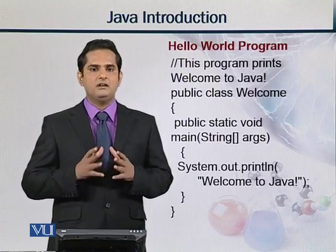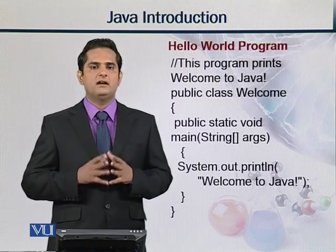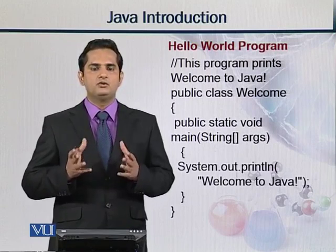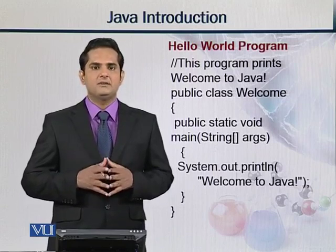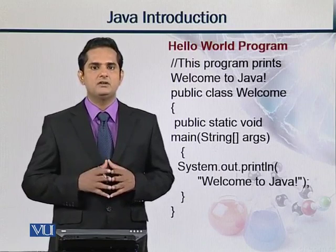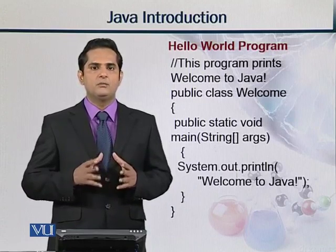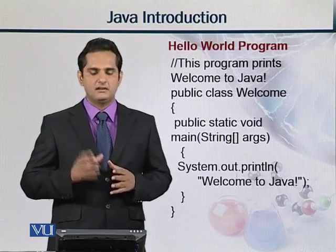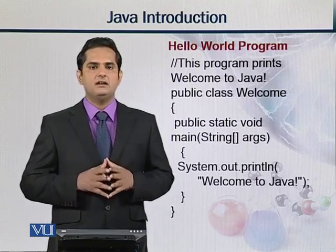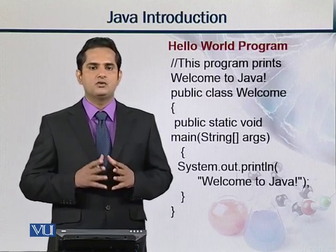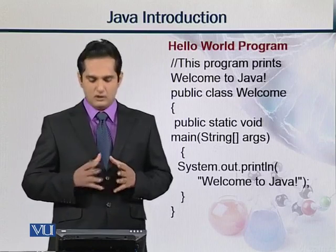'Public' is basically an access modifier — it means the program is available to all users of your system. If you write 'private', that means the program is accessible to you alone or your private members only, whereas 'public' is for everyone. 'Class' tells us that this is an object oriented paradigm based language, and programs are written in the form of classes. 'Welcome' is the name of that class file. Then we have 'public static void main(String[] args)' — this main method is the starting point of compilation, and the result produced by the program will be written inside the main method.